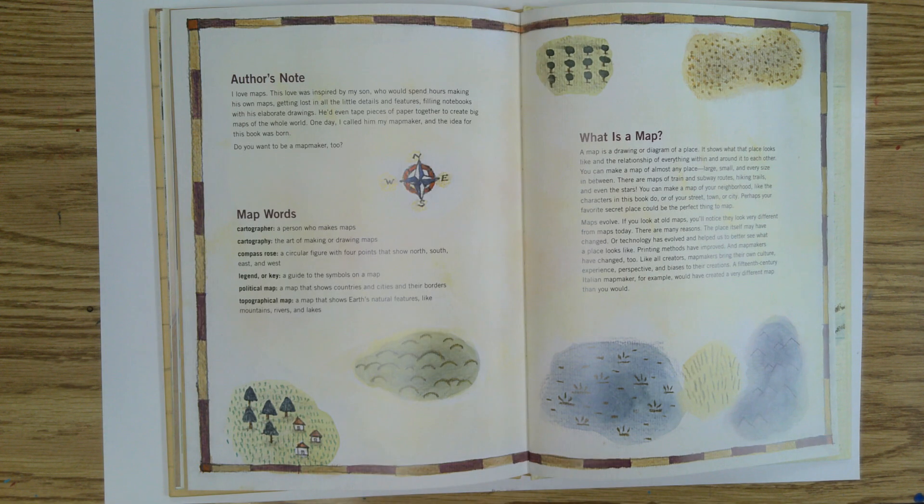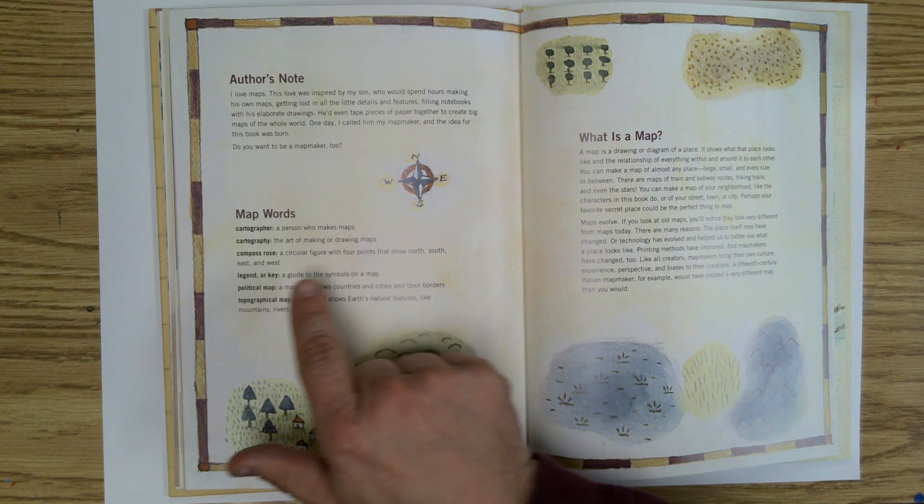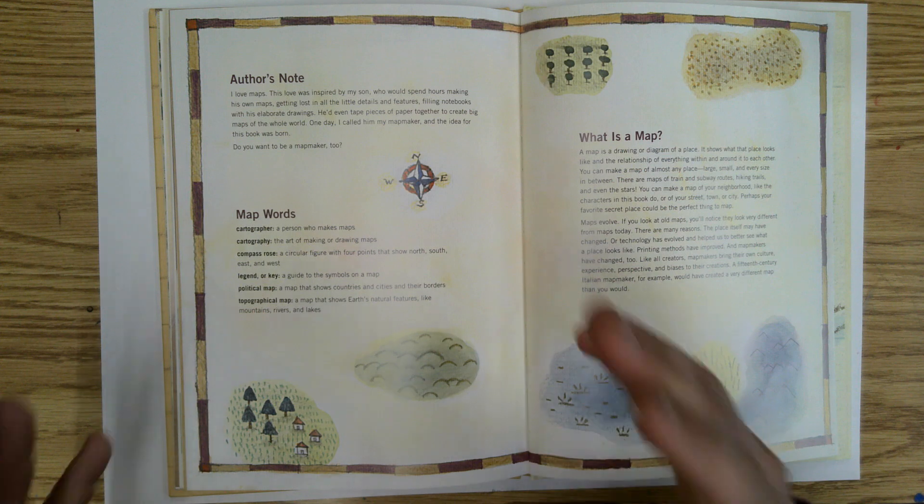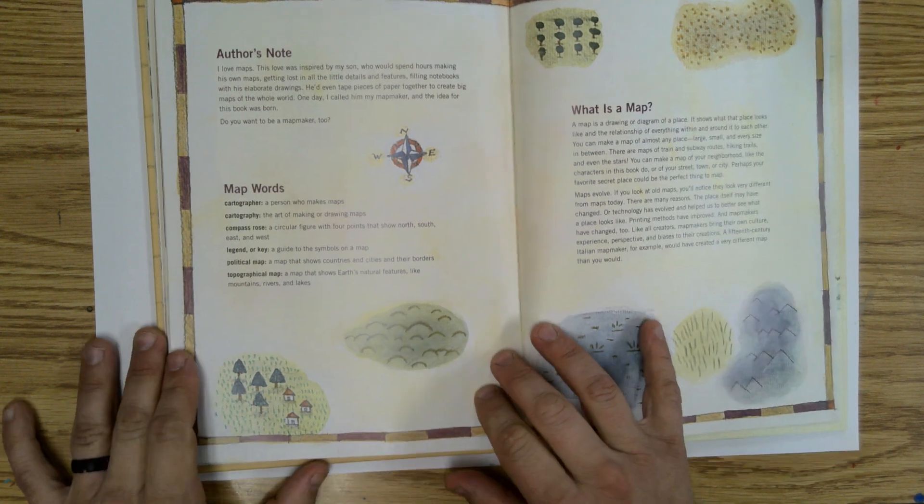A rose compass is a circular figure with four points that show north, south, east, and west. And a legend or key is a guide to certain symbols on the map.